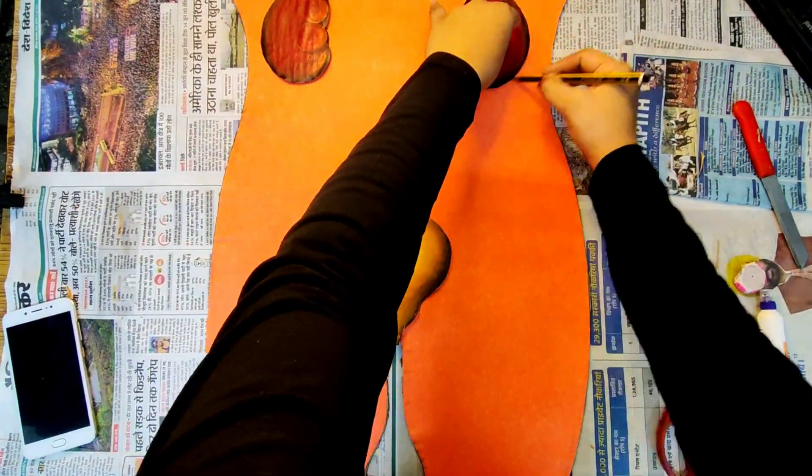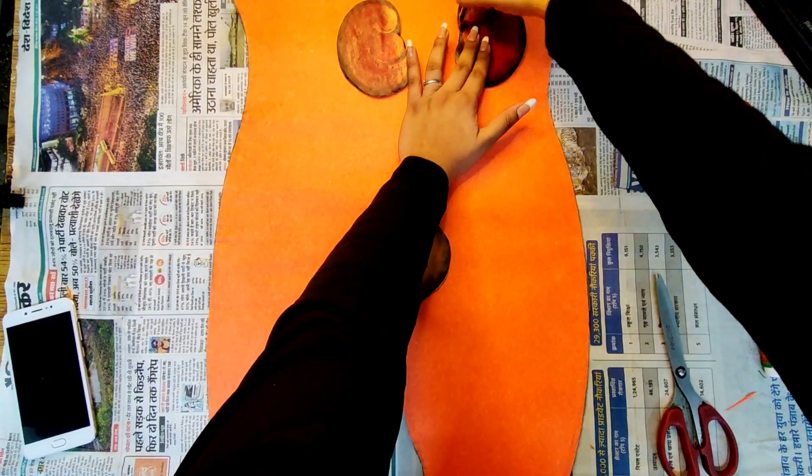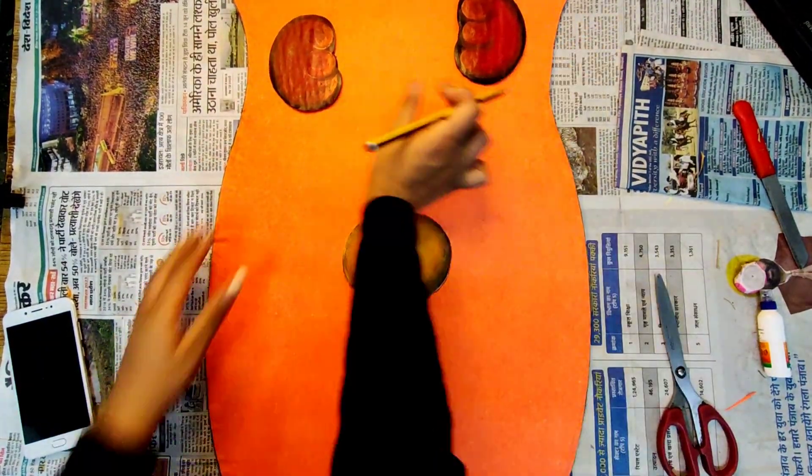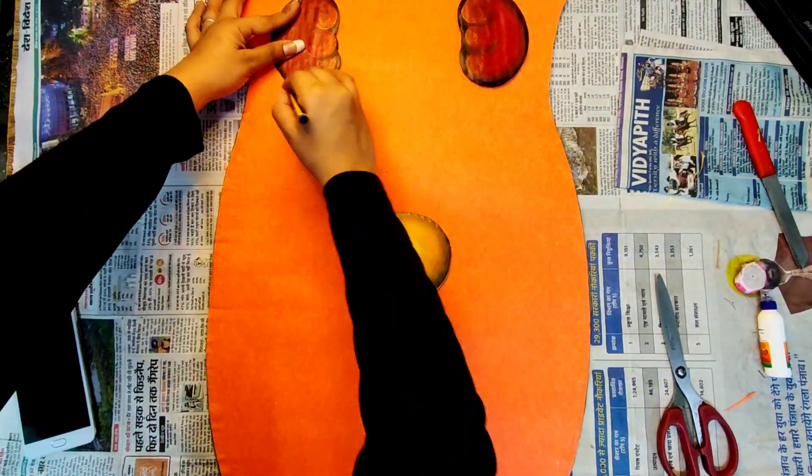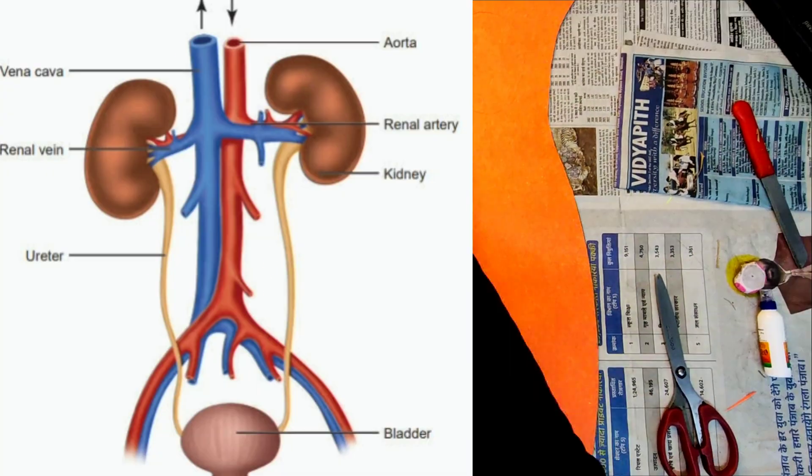If you want to learn how I made these 3D kidneys and the gallbladder, I've mentioned the video in the i-button above. Now comes the main part of making the arteries and veins of the excretory system.